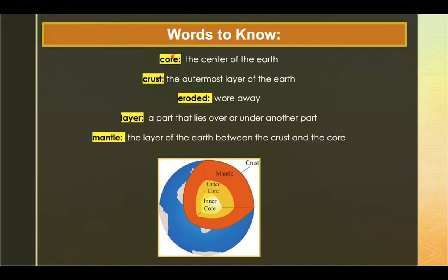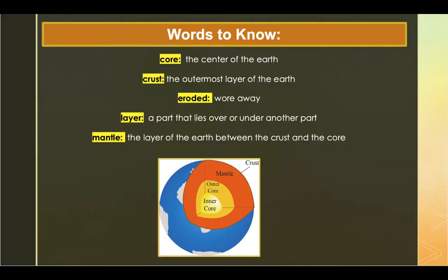The first word we need to listen for is the word core. Core is the center of the earth. An example: it is impossible to journey to the earth's core because it is too hot for humans. The next word to listen for is crust, the outermost layer of the earth.